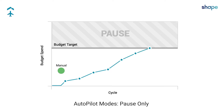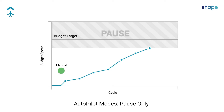If the budget target is changed mid-cycle, automation zones will adjust, but any paused campaigns will remain paused. If you want to keep advertising, campaigns will have to be enabled manually.